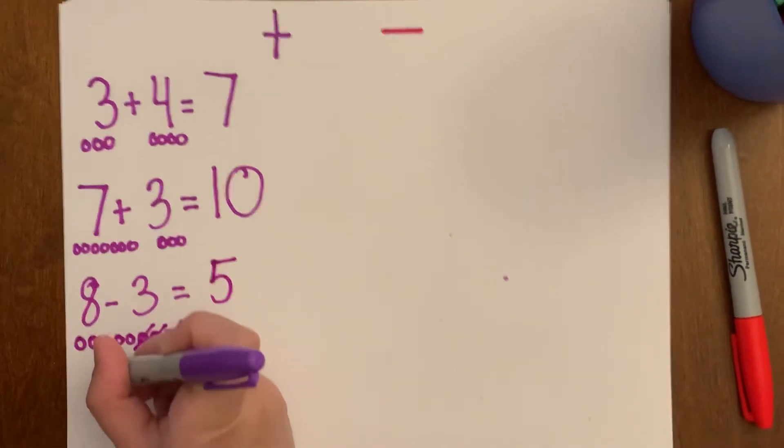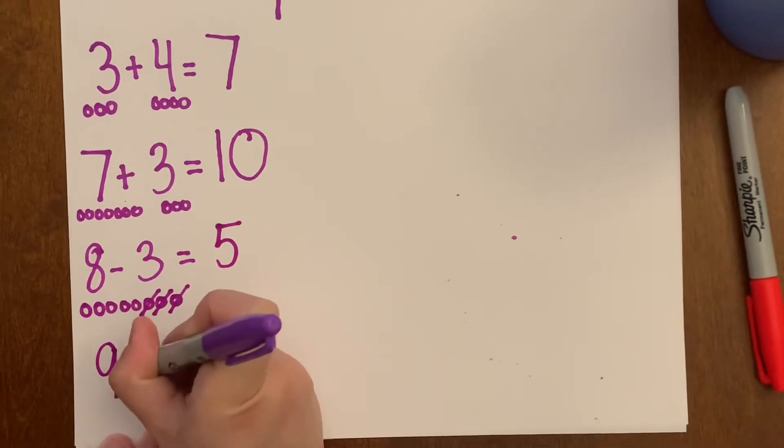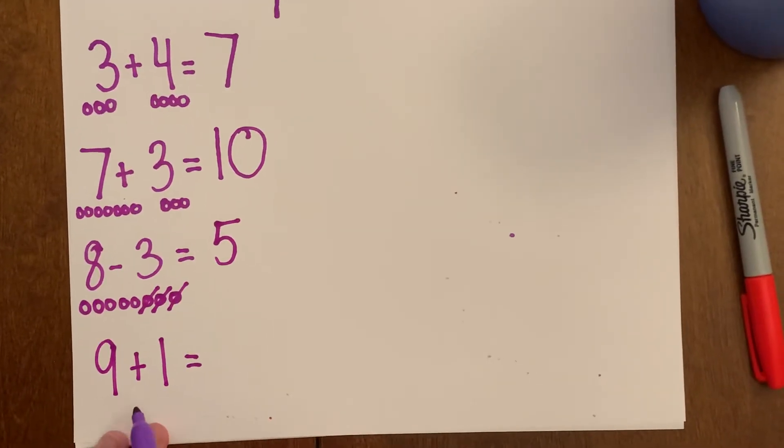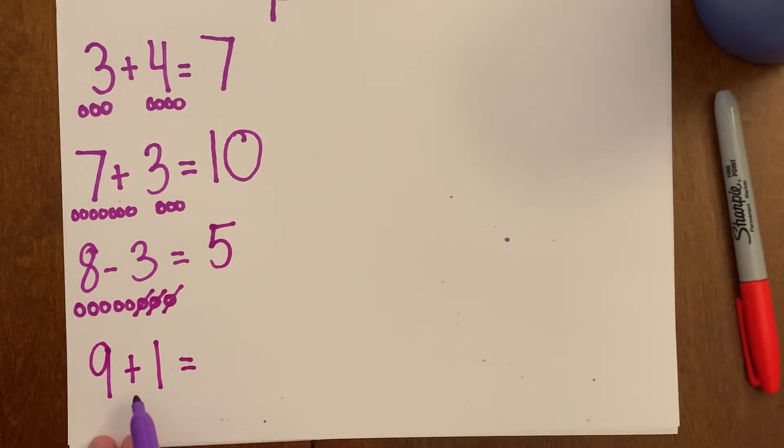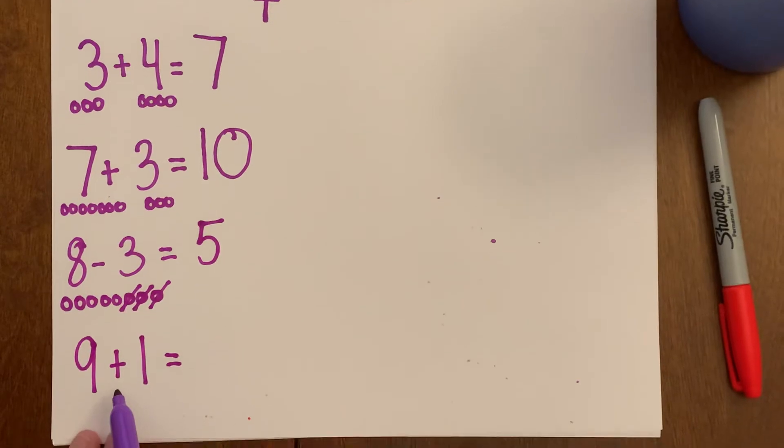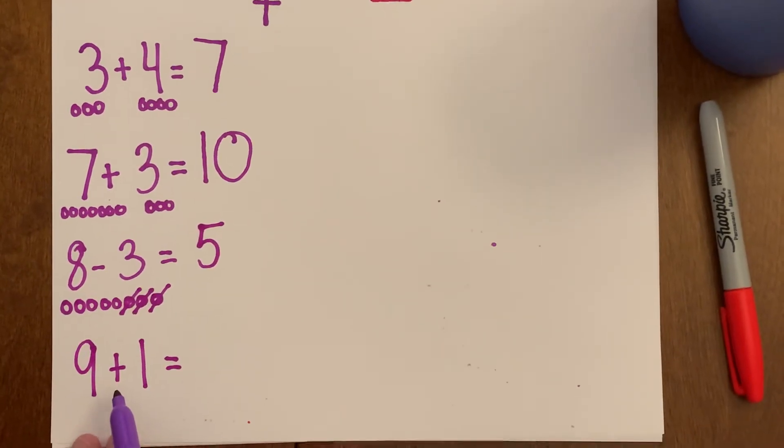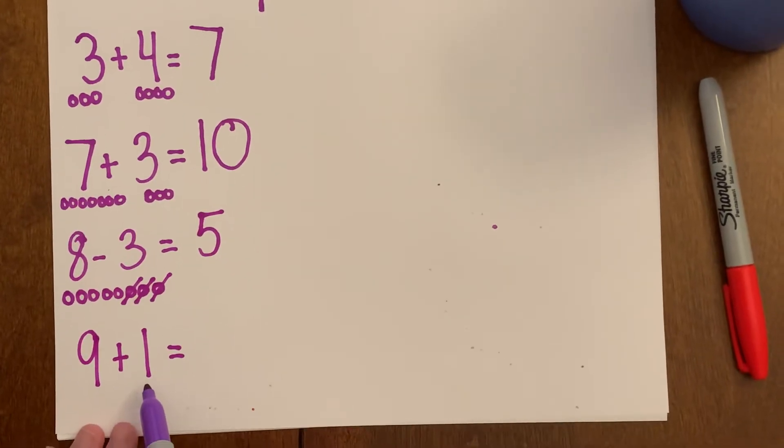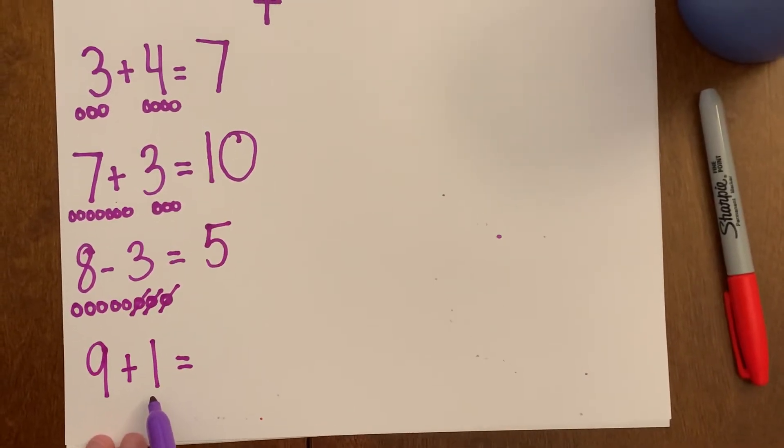Okay, next one. Nine minus, oh, wait. I changed the symbol again. What is this? This isn't a minus. It's a plus. So that means we're switching. We are going to be adding. So we have nine plus one more.